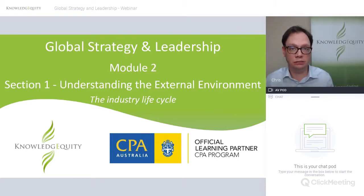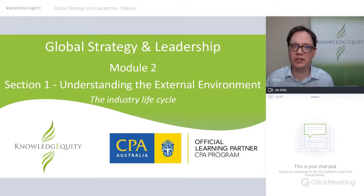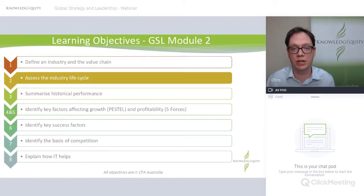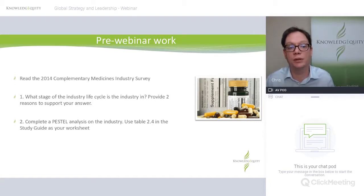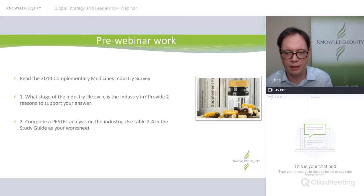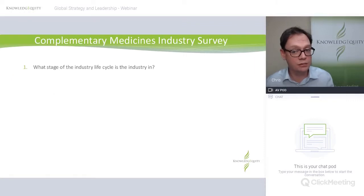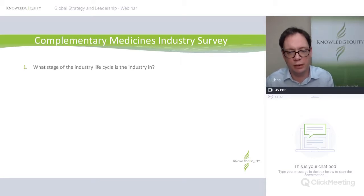Every industry has a life cycle — pretty much a beginning, sometimes an end. The newspaper industry might have an end in the next 20 years; others go through a stage of renewal. This relates to the second learning objective in Module 2. Let's go to our pre-work: after looking at the complementary medicines industry survey, what stage of the industry life cycle are they in, and think of a couple of reasons to support your answer? You only need to do a skim read of the document. The key points are right there — it's $3.5 billion, expected to grow to $4.6 billion in 2017-18, and this survey is from 2014.